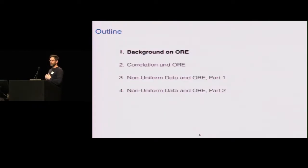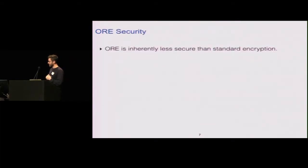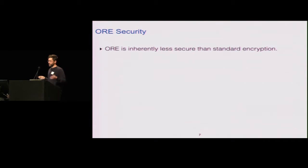For the rest of the talk, I'll spend a little while giving background on ORE, talking about prior attacks and different constructions, then move on to our results on correlated columns, and then look at what happens when you use non-uniformly distributed data. The first thing to understand about order-revealing encryption is that it's inherently less secure than regular encryption. Because somebody can look at two ciphertexts and see which has the smaller plaintext, they're learning information that regular encryption just doesn't reveal.